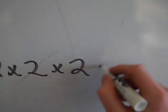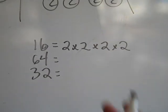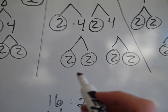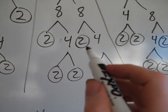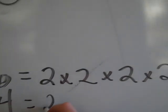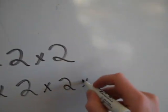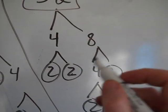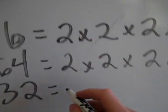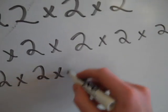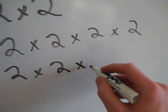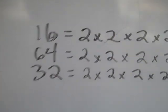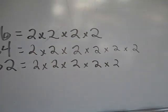Notice how I'm not writing it in exponential form this time, because it makes it easier to use. Then 64's prime factorization was 2 times 2 times 2 times 2 times 2 times 2 — six 2's. And then 32 was 2 times 2 times 2 times 2 times 2 — five 2's. It's only 2's. They all only have 2's as their prime factors.